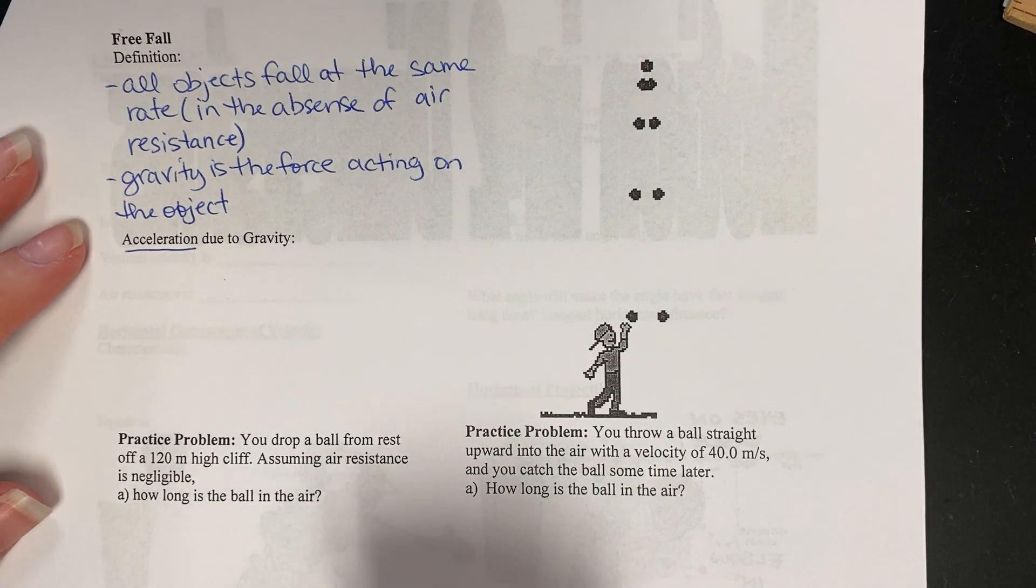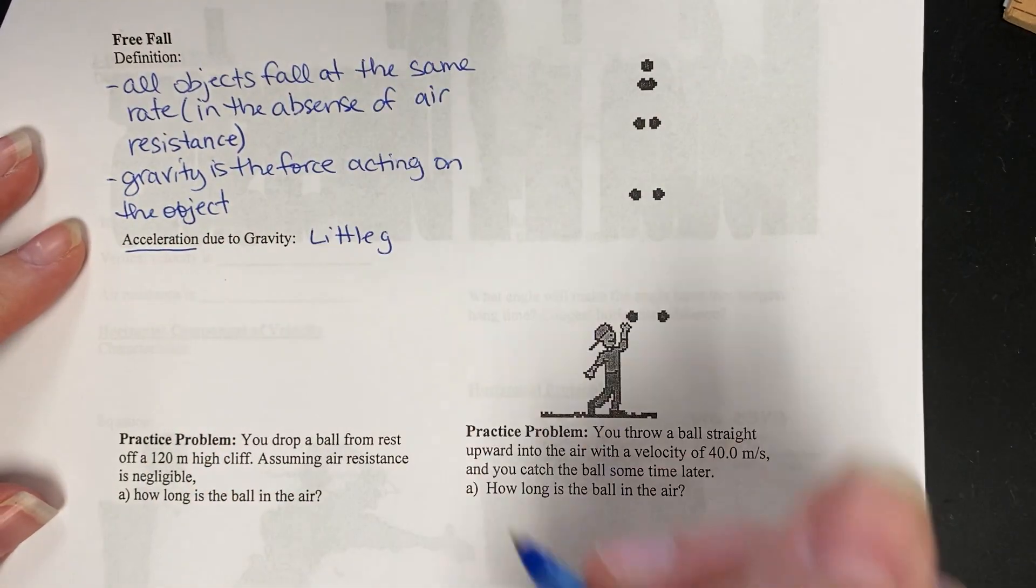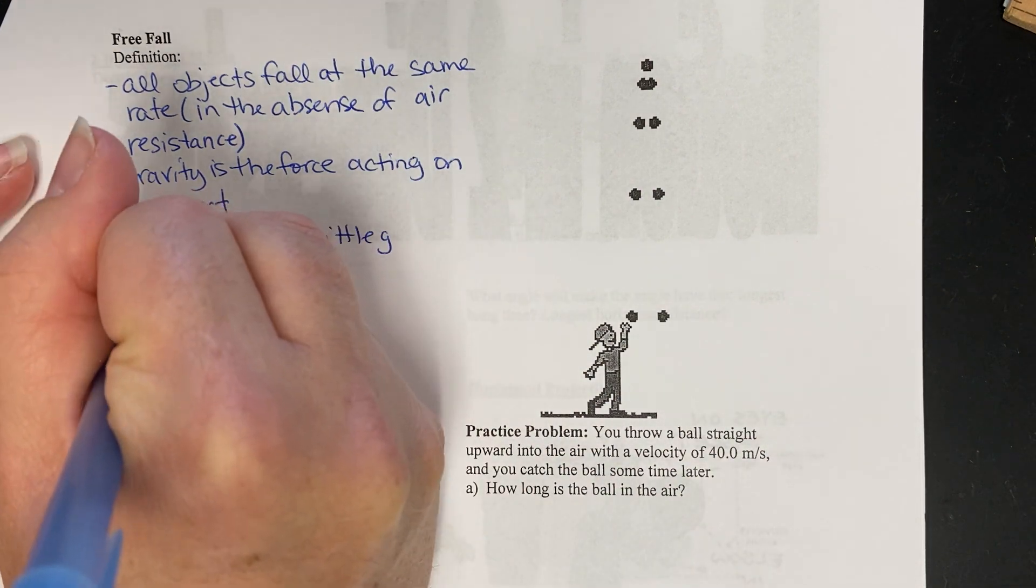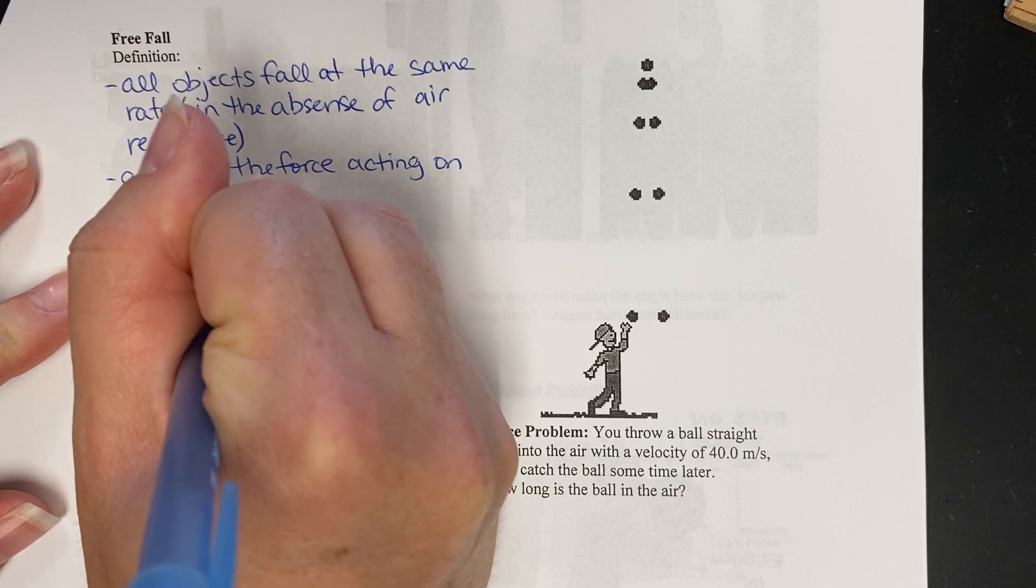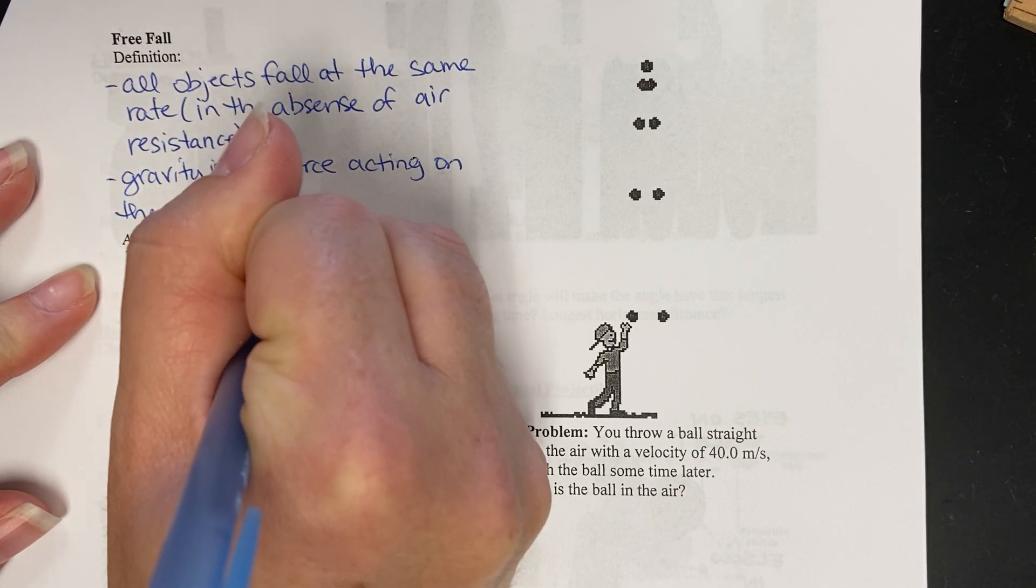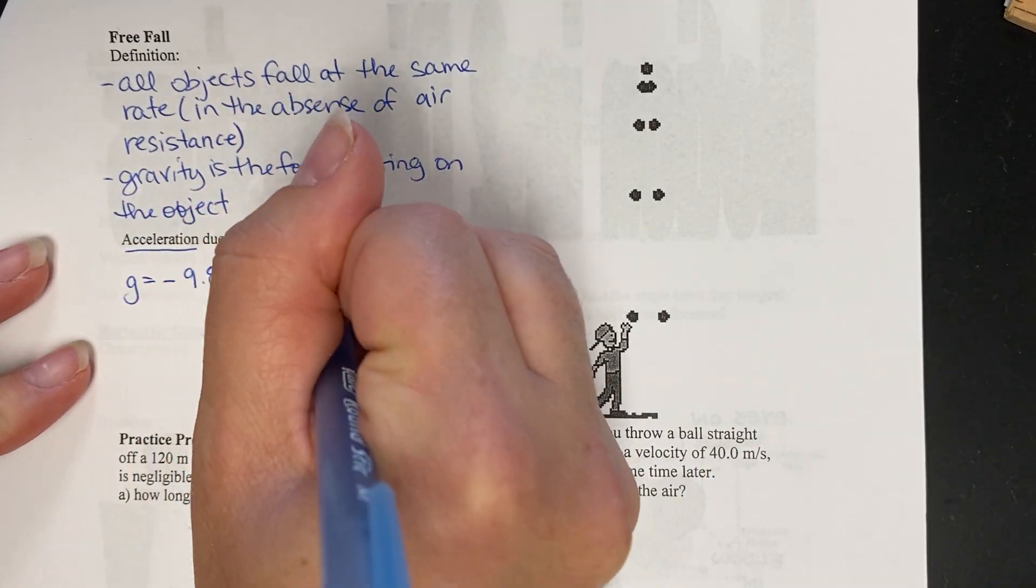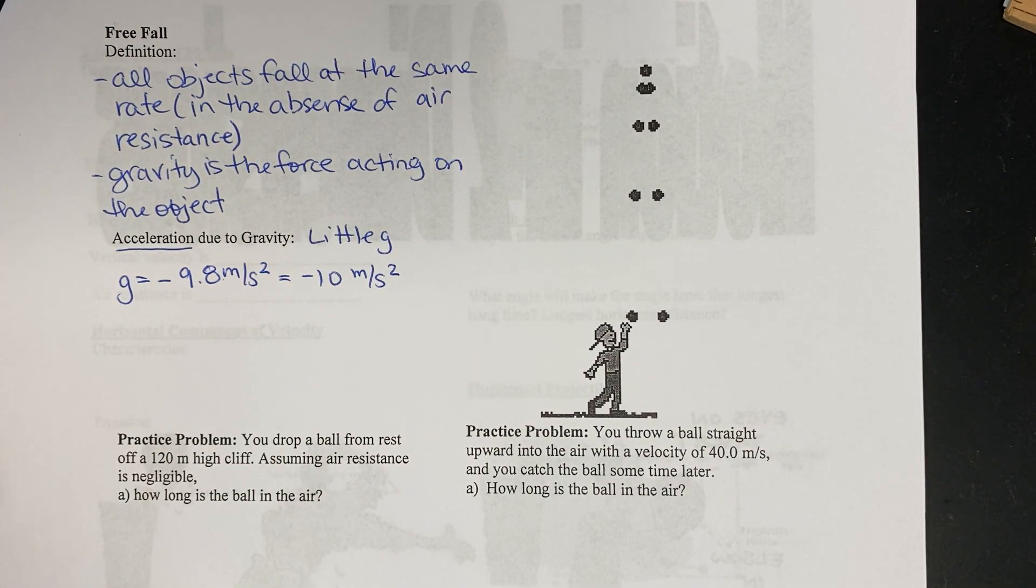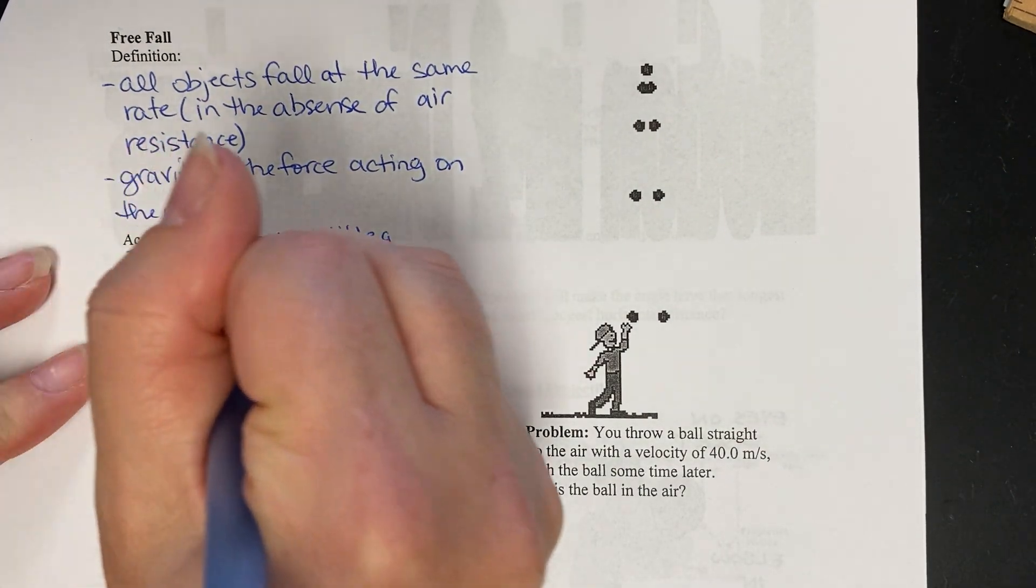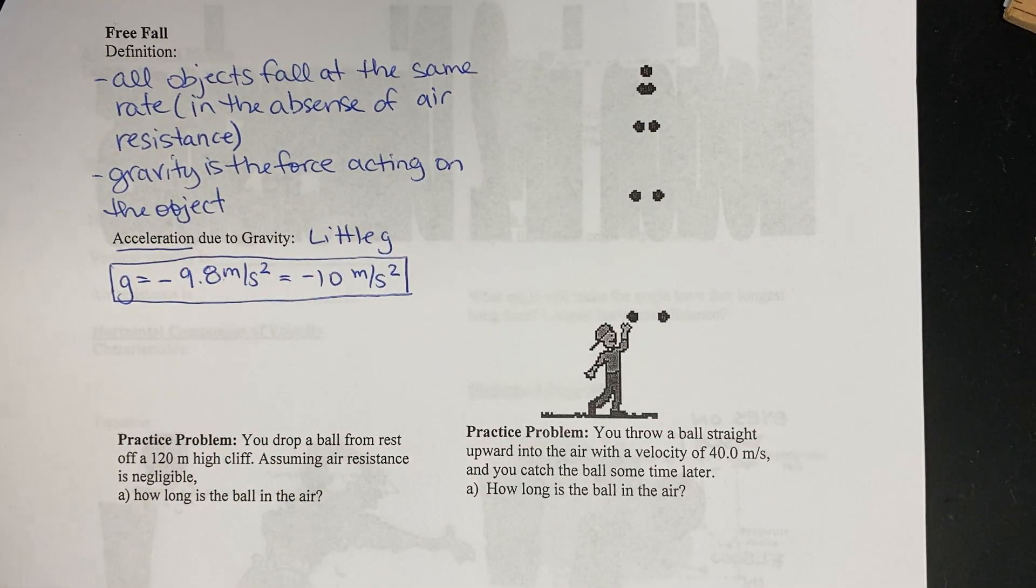Now the acceleration due to gravity we call little g. And little g has a value of negative 9.8 meters per second squared. Now, a lot of people like to use negative 10 because it's pretty darn close. We would say it's in the ballpark as the value. Does it matter what you use? Nope. You can use either a 10 or a negative 10 or a negative 9.8.